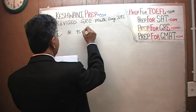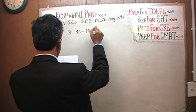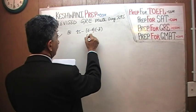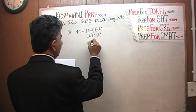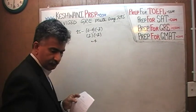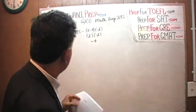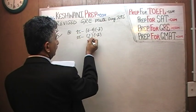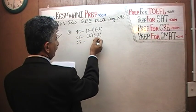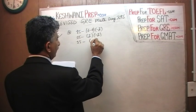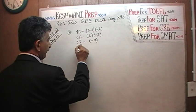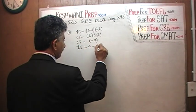15 minus (6 minus 4) times negative 2. 6 minus 4 is 2. 2 times negative 2 is going to be negative 4. So we have 15 minus negative 4. And a negative and a negative is going to be a positive. So we get 15 plus 4 which is 19.